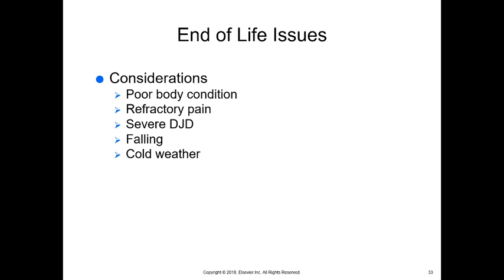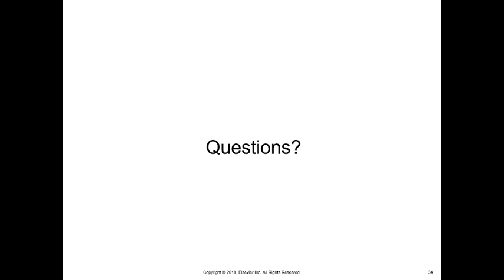End-of-life issues with larger horses require monitoring body condition carefully. If refractory pain cannot be managed with common medications, or if the horse has severe degenerative joint disease or is falling — which is dangerous for the horse and handlers — euthanasia should be considered. We may also consider that an older horse may not be able to handle another fall or winter season as they age and become less able to cope with cold weather. Please feel free to reach out with any questions about this lecture.